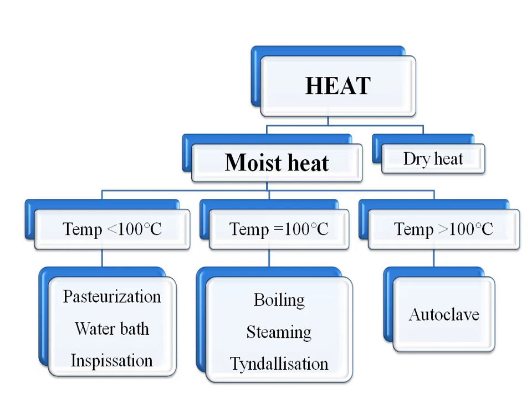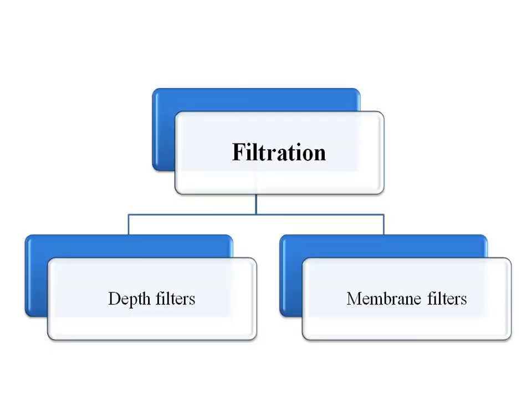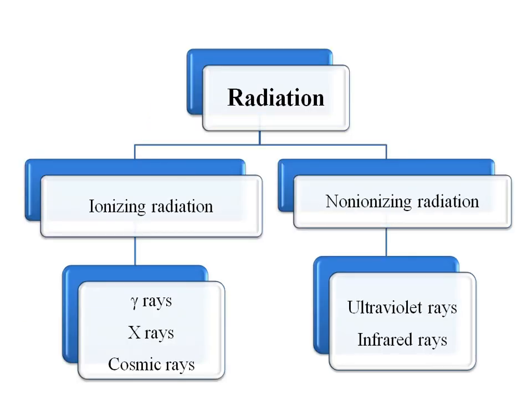After finishing sterilization by heat, we will move on to sterilization by filtration. We have two types of filters — depth filter and membrane filter — which I will explain in detail in subsequent sessions. Sterilization by radiation is classified into ionizing radiation and non-ionizing radiation. Examples for ionizing radiations are gamma rays, X-rays, and cosmic rays. Examples for non-ionizing radiations are ultraviolet rays and infrared rays.